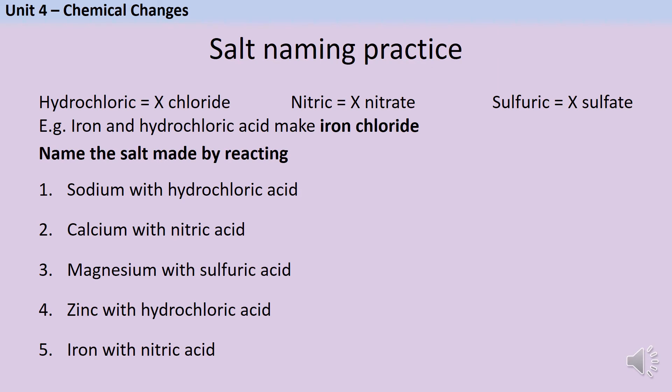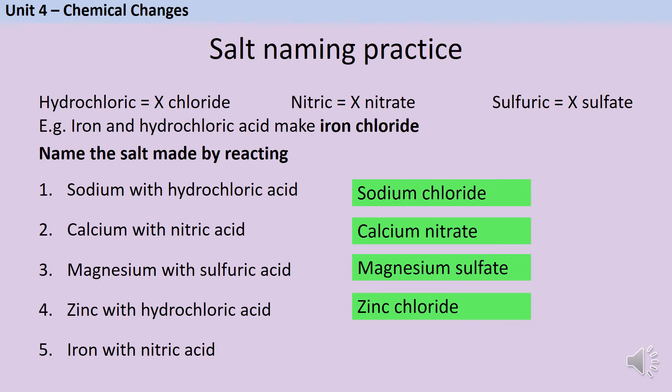Hopefully you've got that sodium will react with hydrochloric acid to make sodium chloride. Calcium reacts with nitric acid to make calcium nitrate. Magnesium reacts with sulfuric acid to make magnesium sulfate. Zinc reacts with hydrochloric acid to make zinc chloride. And iron reacts with nitric acid to make iron nitrate.